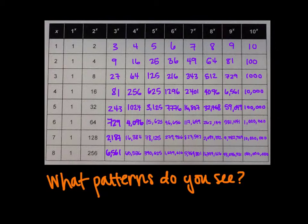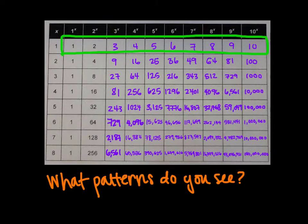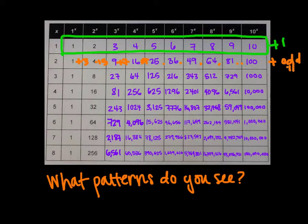Looking at row patterns: for the first-power row, values increase by 1 — 1 to the first is 1, 2 to the first is 2, 3 to the first is 3, and so on. In the next row (squared values), I see differences of plus 3, plus 5, plus 7, continuing with plus 9, plus 11, plus 13, plus 15, plus 17, plus 19. So the differences are odd numbers, which is kind of cool.